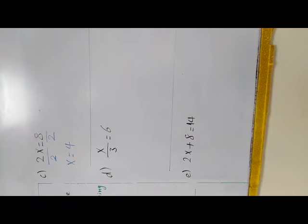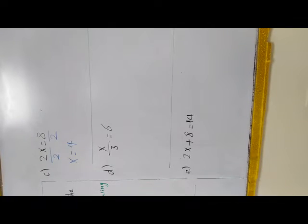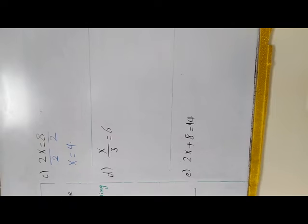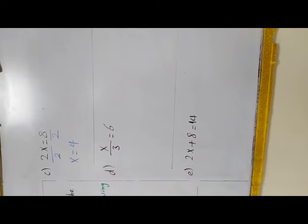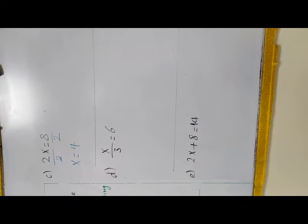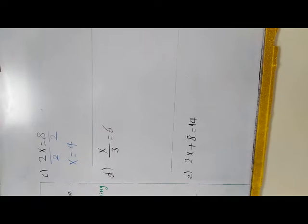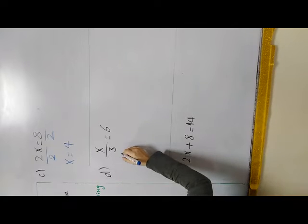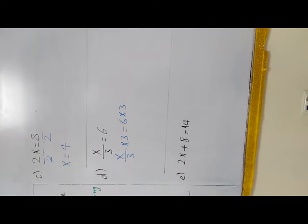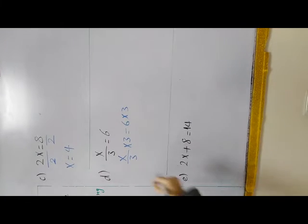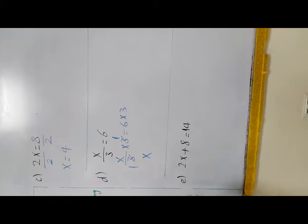Letter D: x over 3 equal 6. Here x is divided by 3, so I need to remove the 3. We agreed that multiplying both sides by the same number doesn't affect the equality. So I multiply both sides by 3. On the left, x over 3 times 3 simplifies to x. On the right, 6 times 3 equals 18. So x equals 18 and the solution of the equation is 18.